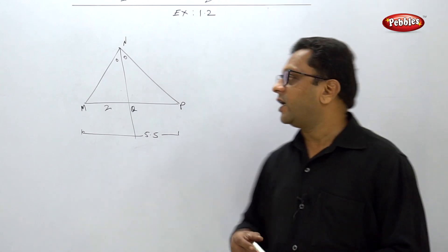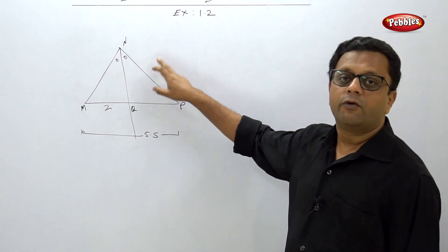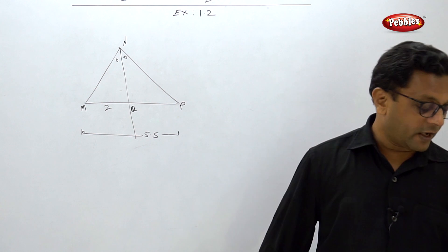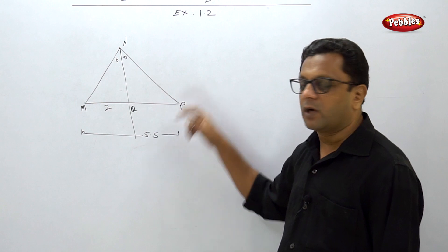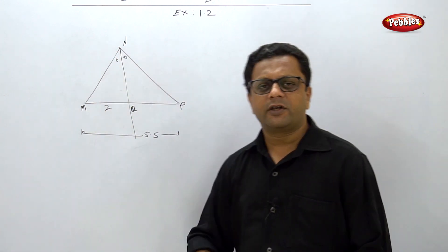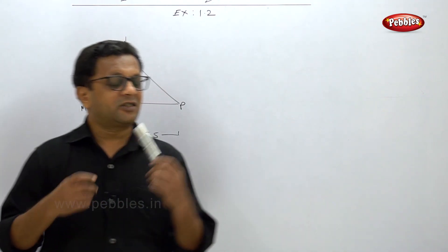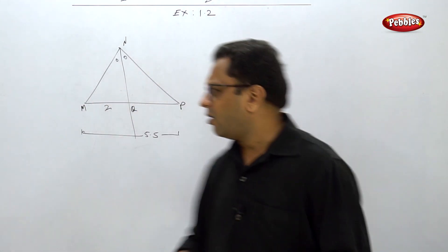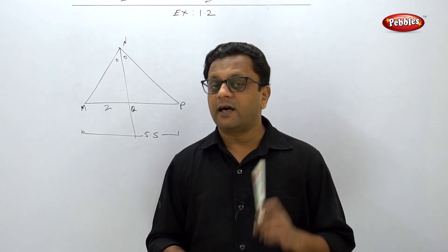In Example 5, two sides are given, one side is given, and the unknown must be found. Additionally, you are asked to find the perimeter of triangle PQR, meaning you add all three sides. The examples are extremely simple — just multiplication and division, or subtraction. Take care while writing the answer.